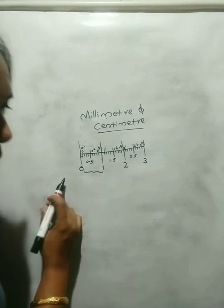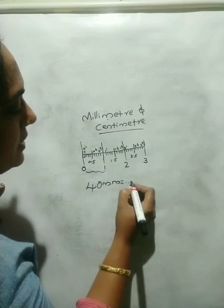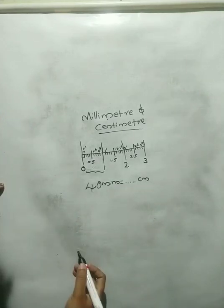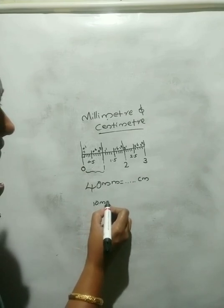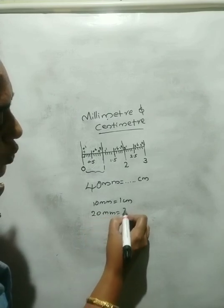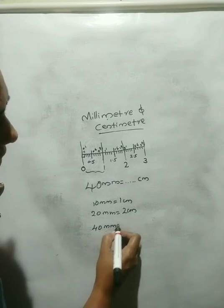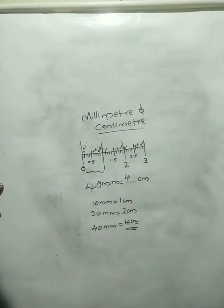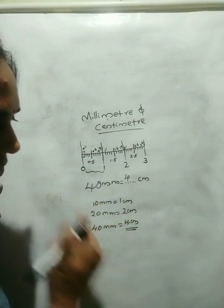Now, if we have 40 millimeters, we need to find the equivalent in centimeters. We know 10 millimeters is 1 centimeter, so 20 millimeters is 2 centimeters, and 40 millimeters will be 4 centimeters. The answer is 4 centimeters. That is the millimeter and centimeter relation.